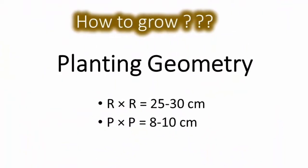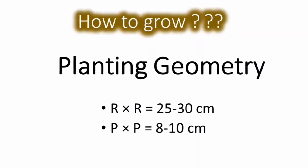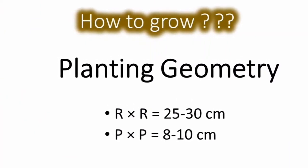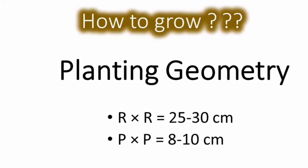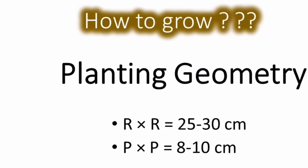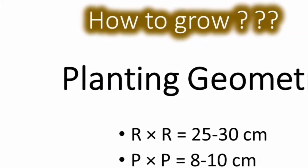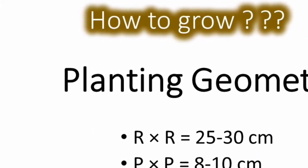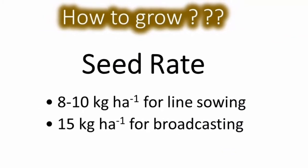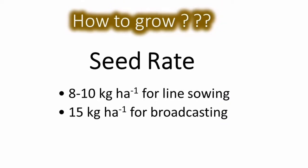For growing foxtail millet, the planting geometry should have row-to-row distance of 25 to 30 centimetres and plant-to-plant distance of 8 to 10 centimetres. You can sow it by line sowing or broadcast it. Seed rate should be 8 to 10 kg per hectare for line sowing and 15 kg per hectare for broadcasting.